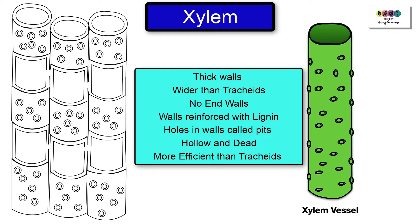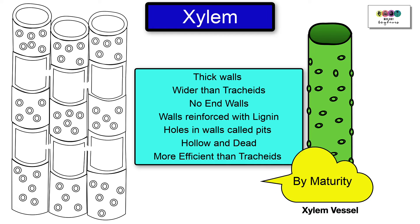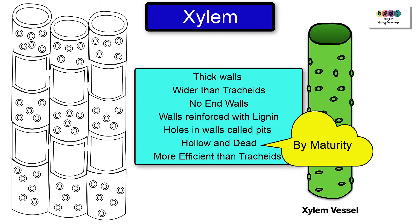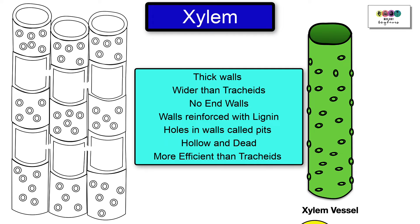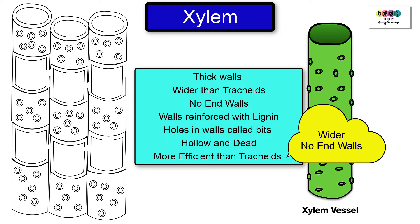The walls are also reinforced with lignin. They have the holes called pits. They are hollow and dead, and they're much more efficient at transporting water than tracheids because they're wider and they don't have any end walls.